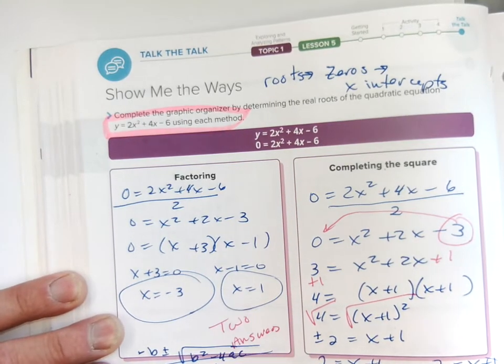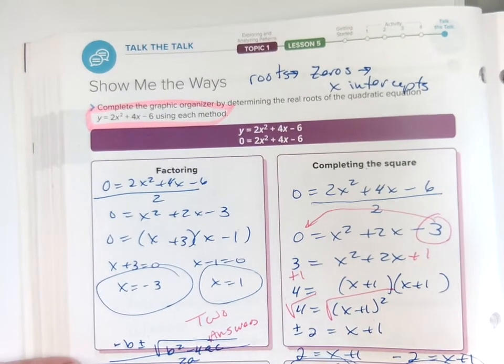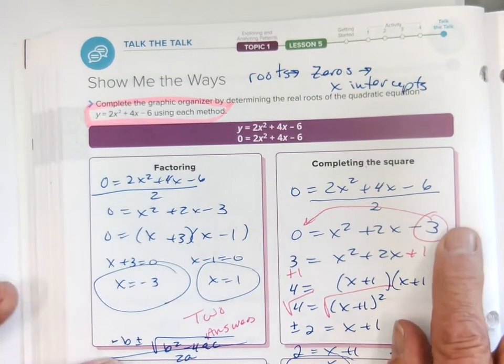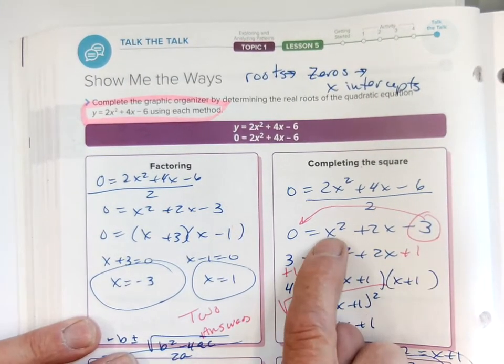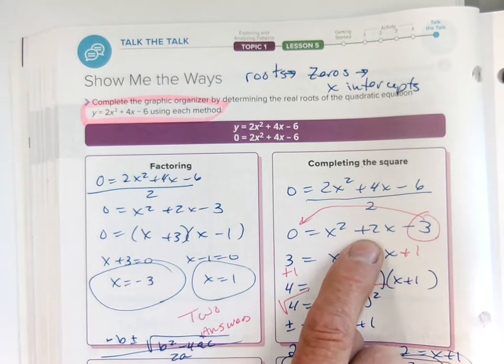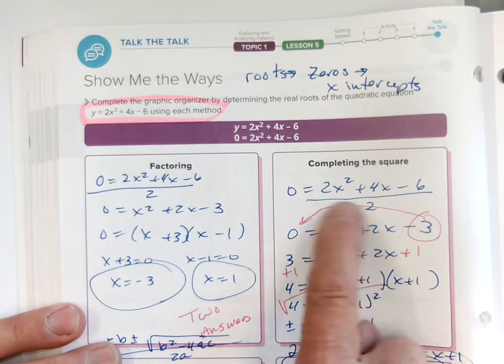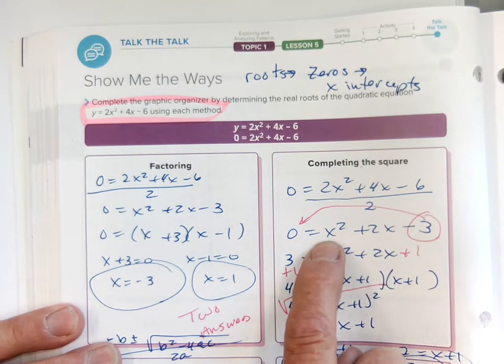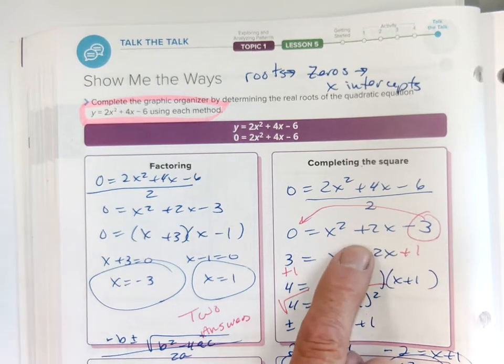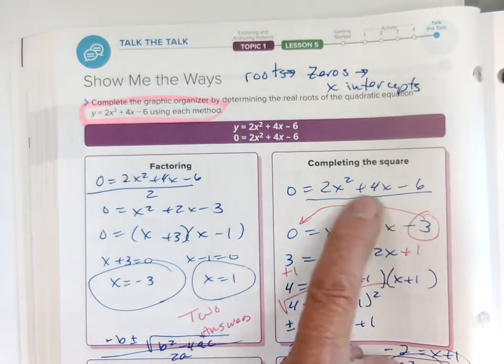Great. Now another way to tackle this is completing the square. If I can get x² and an even number, it's pretty easy. Again, I divide everything by two: x² + 2x - 3. The very first thing you need to do is bring c to the other side.